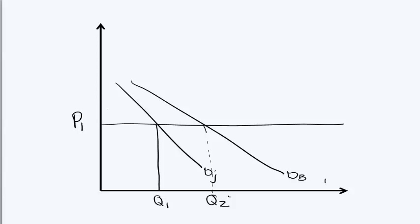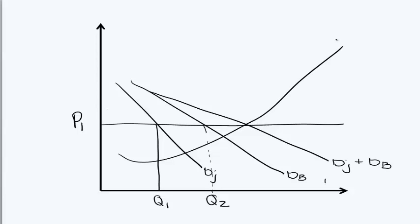To get the equilibrium, you sum Johan and Bongani's demand curves and draw in the supply to get the equilibrium quantity. This means that it is actually a horizontal summation of the different demand curves.